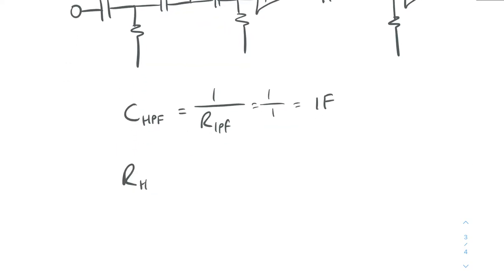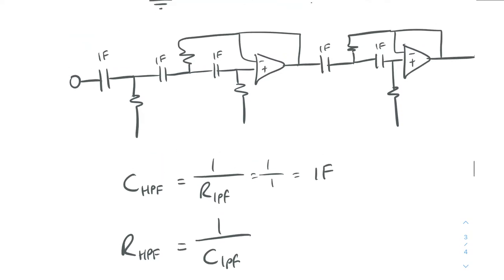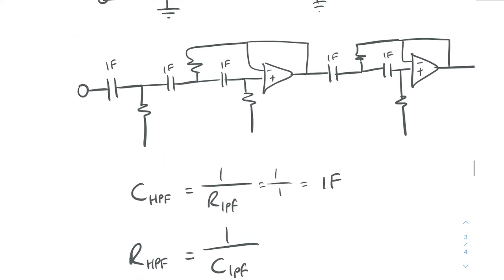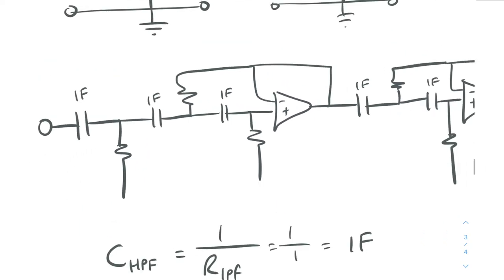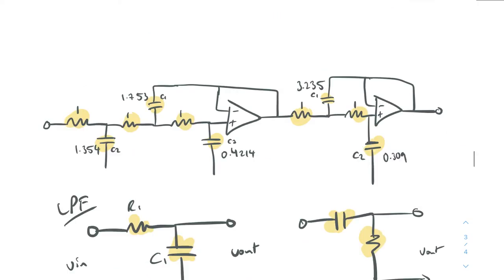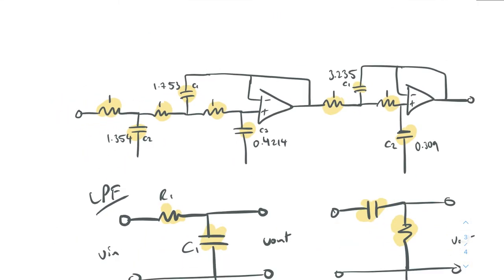So the resistor value for the high pass filter is equal to one over the capacitor for the low pass filter. And that's it. It literally is that easy. So if we take, for example, here, which is our, technically our first resistor here, we've got a capacitor value of 1.753.